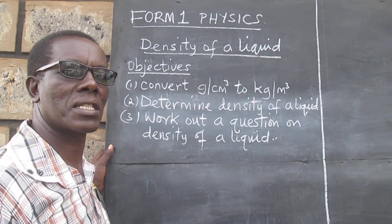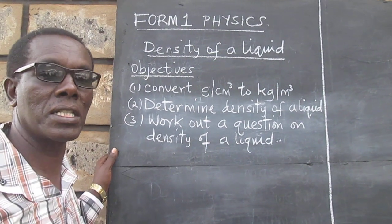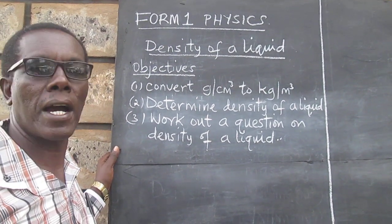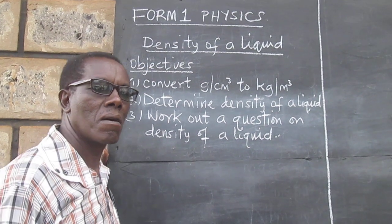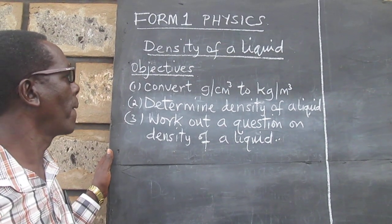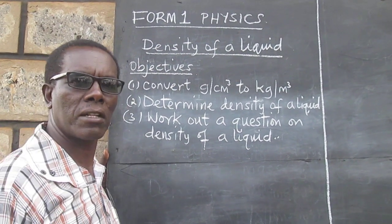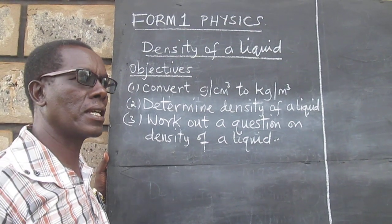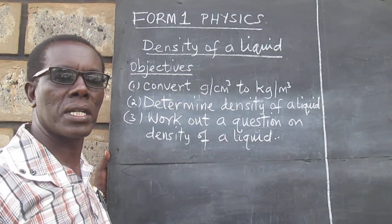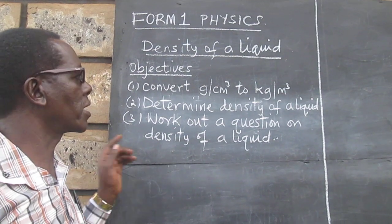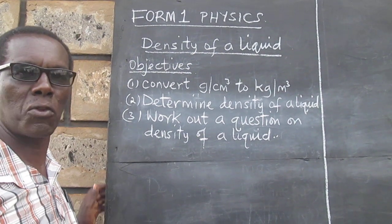In our last video, we looked at how to get the density of solid. And we have three objectives. Number one, we would like to see how we can convert density in gram per cubic centimeter to kilogram per meter cubed.